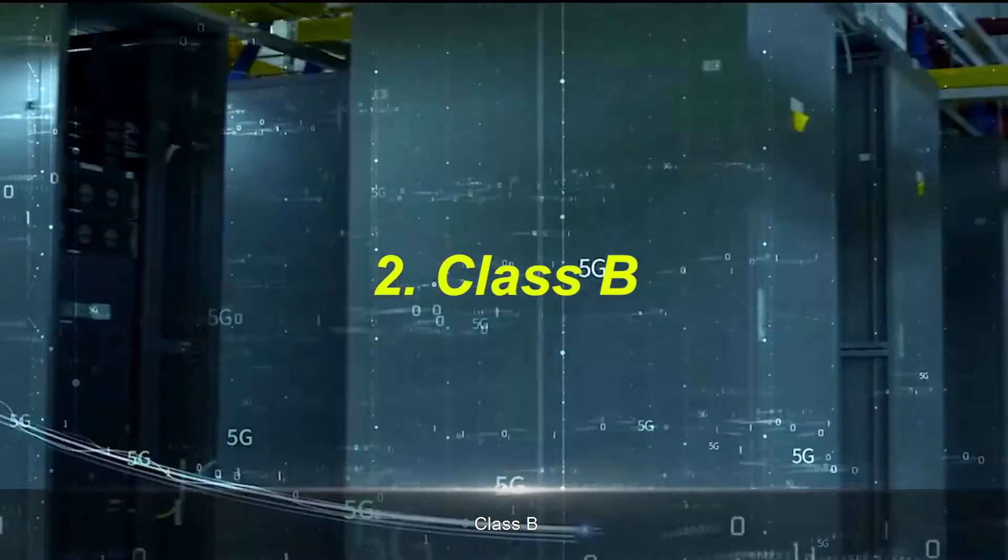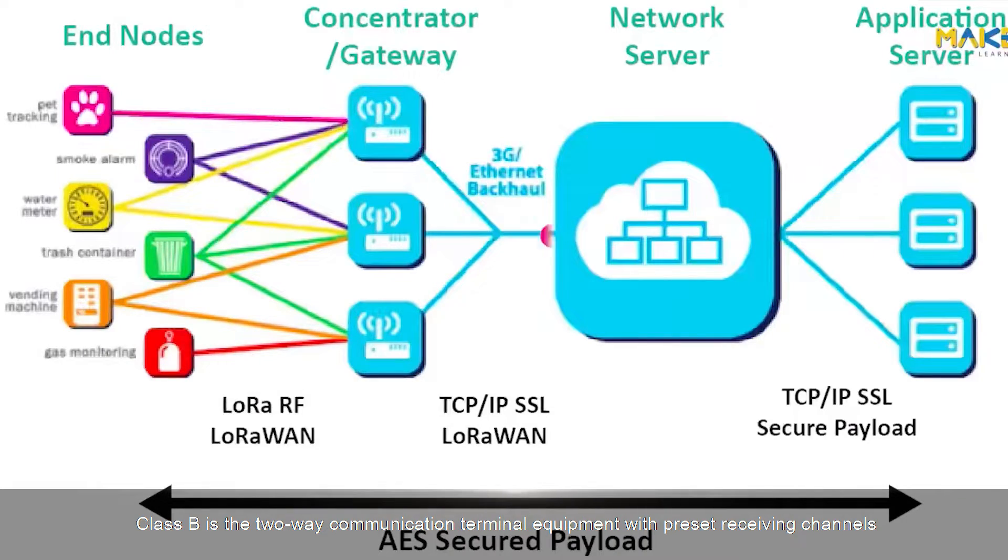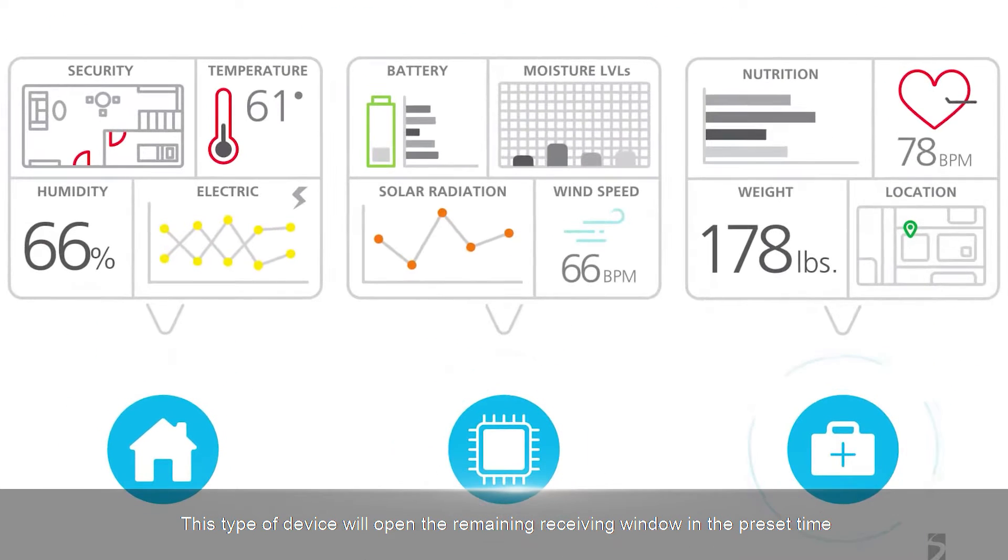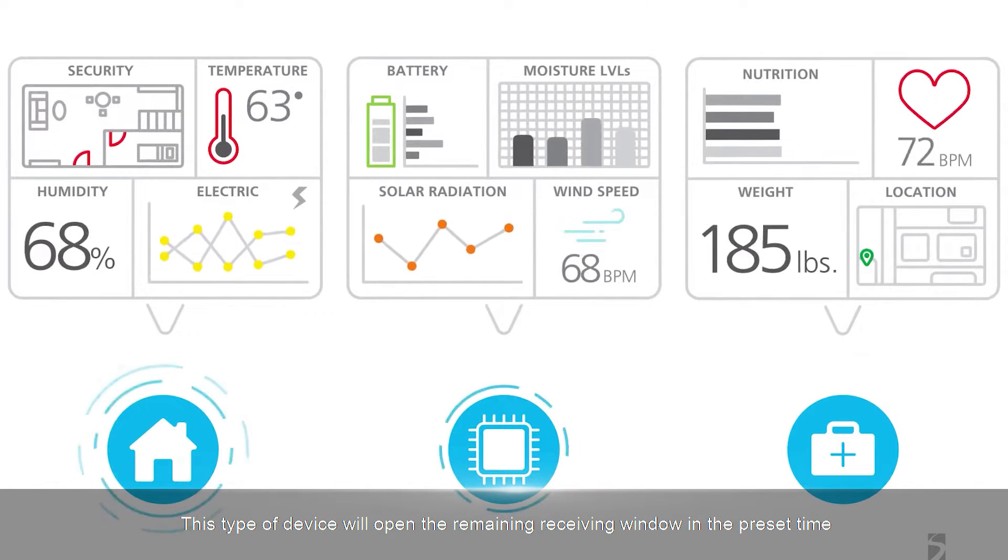Class B is the two-way communication terminal equipment with preset receiving channels. This type of device will open the remaining receiving window at the preset time.